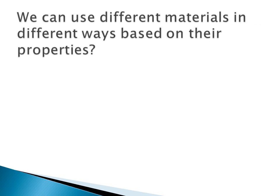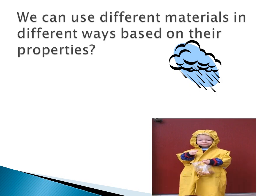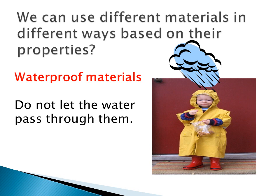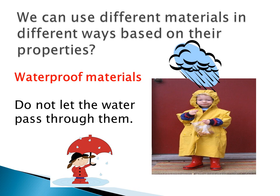We can use different materials in different ways based on their properties. It's raining — this clever boy is wearing a raincoat and rain boots. Why? Because he does not want his clothes to get wet. He needs a material that does not let water pass through. These materials are called waterproof materials, like an umbrella.